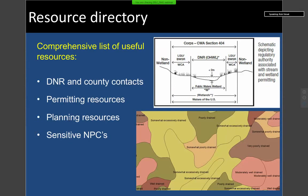The other major addition is a resource directory — a comprehensive list of resources people need when in the field. For example, there's a schematic depicting the regulatory authorities for various agencies when dealing with water, which can be confusing with three or four agencies overlapping. Someone can quickly look at this to figure out who to contact if they need to cross a stream or operate within a wetland. There are also phone numbers for DNR and county contacts, planting resources, links to aerial photos, soil maps, endangered and threatened species inventory contacts, and sensitive native plant communities — a real wealth of information.